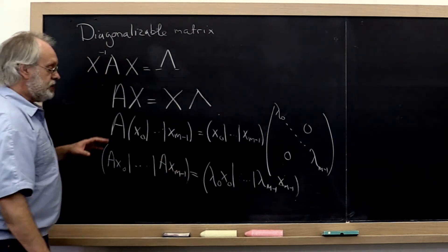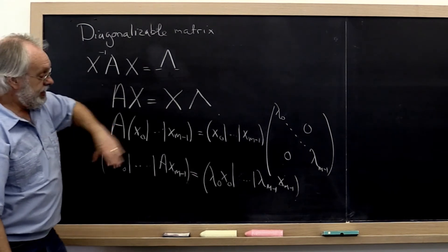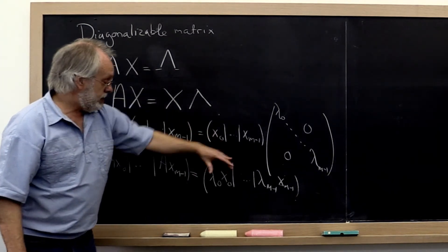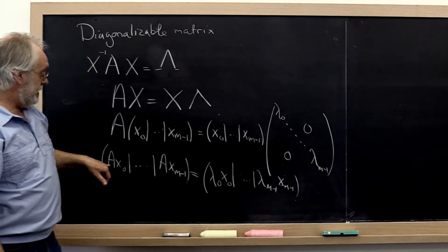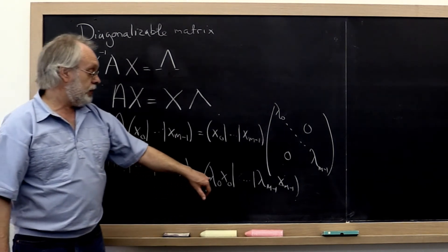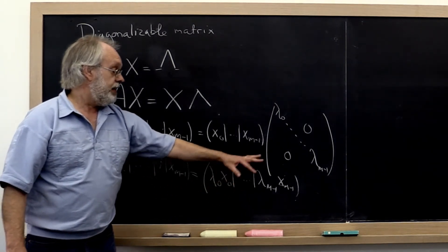If we now set columns on the left equal to columns on the right, we get A X_0 equals lambda_0 times X_0, and so forth.